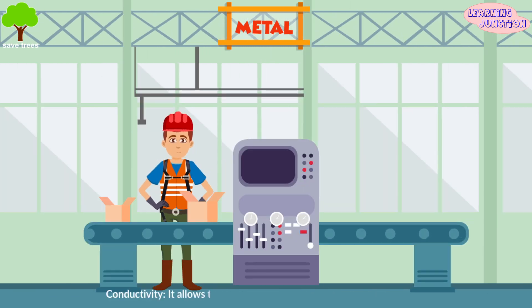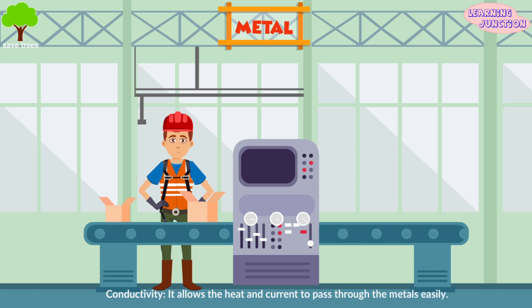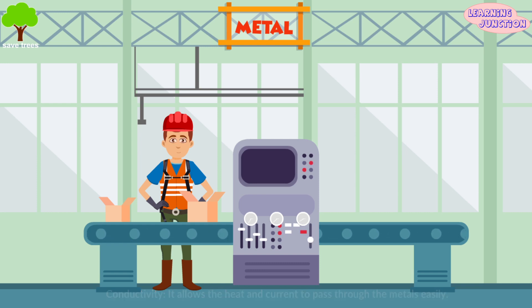Conductivity — it allows the heat and current to pass through the metals easily. Metals like iron and copper wire are good conductors of electricity.